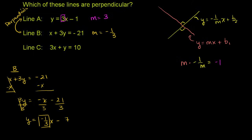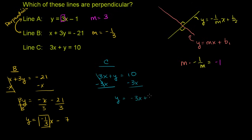Now let's look at line c: 3x + y = 10. Subtracting 3x from both sides gives y = -3x + 10, so its slope is negative 3. This slope is the negative of line a's slope, but not the negative inverse — so it's not perpendicular to line a. And it's the inverse of line b's slope, but not the negative inverse. So line c is not perpendicular to either of the other two — but line a and line b are perpendicular to each other.